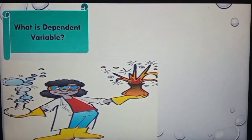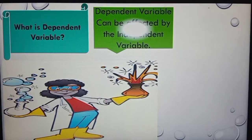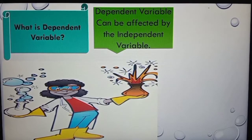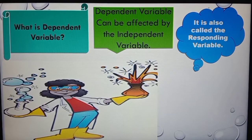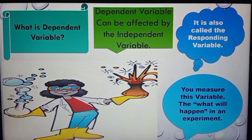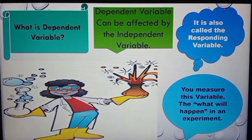The second one is the dependent variable. The dependent variable can be affected by the independent variable. It is also called the responding variable. The thing that we are observing or measuring in an experiment is the dependent variable — it is what will happen in the experiment.